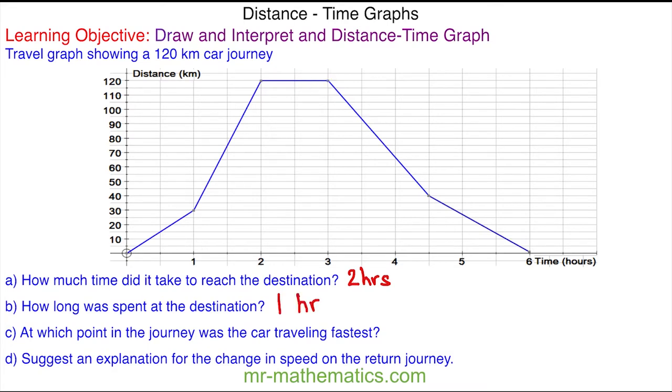For part C, at which point in the journey was the car traveling fastest? You can see this is the steepest line, which means it is covering the distance quickest. So this is between one and two hours.